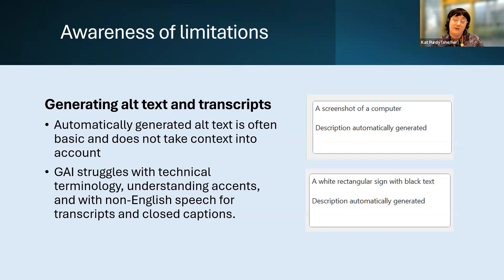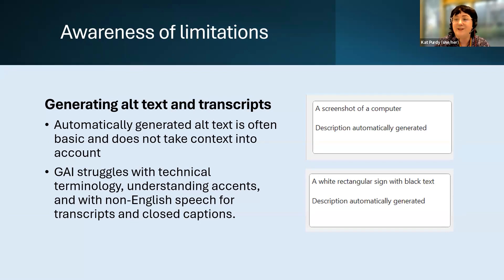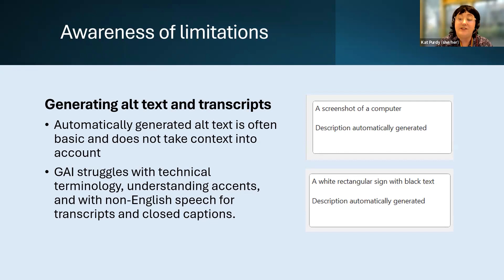Technical fields also use acronyms and abbreviations that are difficult for AI to decipher without context — for example, RAM could mean random access memory or a type of animal, depending on whether you're talking to the computing or veterinary department. Similarly, the term 'Python' could refer to a programming language or a snake, and generative AI doesn't always differentiate correctly between these contextual meanings.